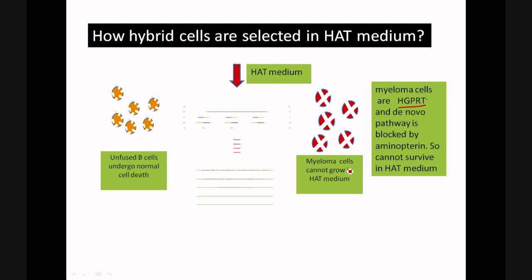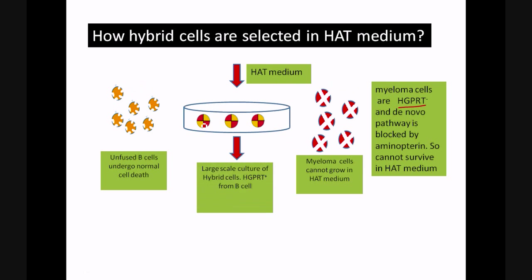In the case of hybrid cells, these hybrid cells have inherited this HGPRT enzyme from B cells, so they have HGPRT enzyme. So they can survive, they can move on with the salvage pathway.